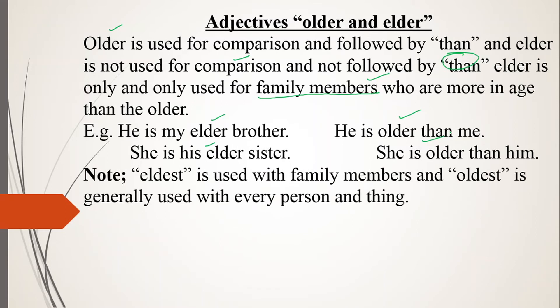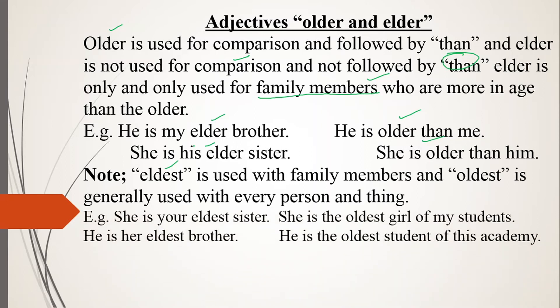Eldest is used only within family members — for example, your grandfather, father, or any family relation. Oldest is used to compare persons and can also be used for things. For example, 'she is your eldest sister' means among all family members she is the eldest.